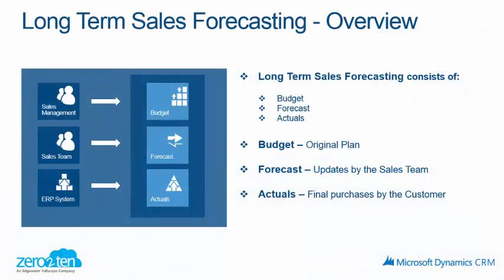The Long-Term Sales Forecasting solution is comprised of various areas. You have your budget, which is your original plan dollars. You have your forecast, which is updates by the sales teams to the numbers that were originally set. And you also have your actuals, which could be the final purchases by the customer that exist within CRM.